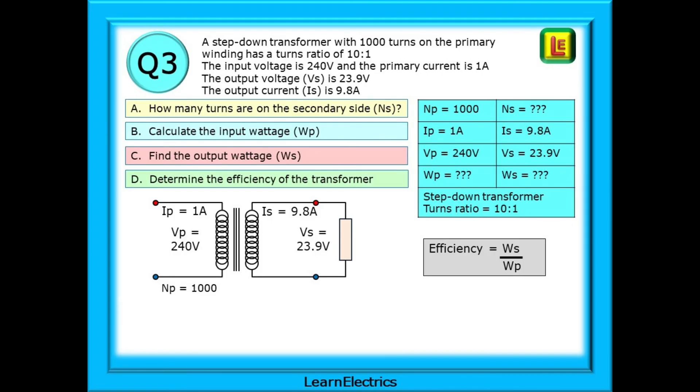The output voltage VS is 23.9 volts and the output current IS is 9.8 amps. Make yourself a little table as shown on the right and have a go yourself. For this question, you will also need to know that the transformer efficiency can be calculated using the formula WS divided by WP as shown in the grey box at the bottom.